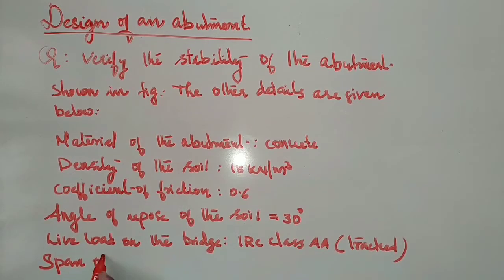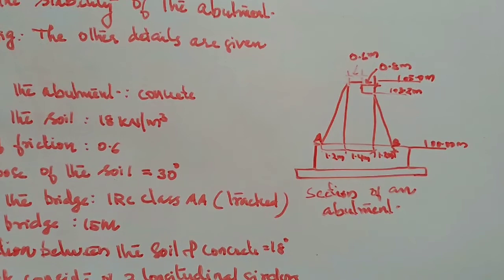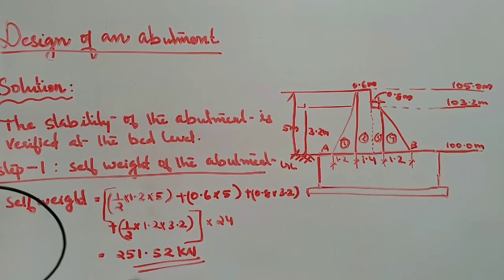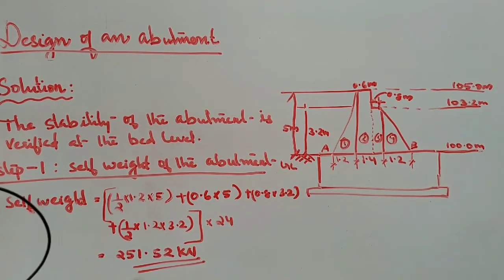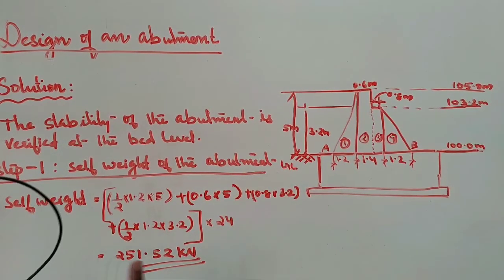Hi everyone. In this design of bridges session, we are discussing the design of an abutment. In the previous section we took one example problem of an abutment. This is the figure of an abutment. In step one, we calculated the self-weight of the abutment, which is 251.52 kilonewtons. Note that the stability of the abutment is verified at the bed level.